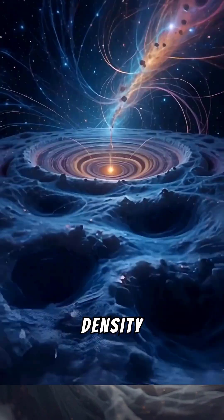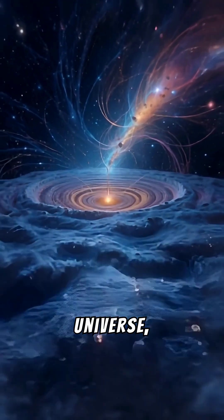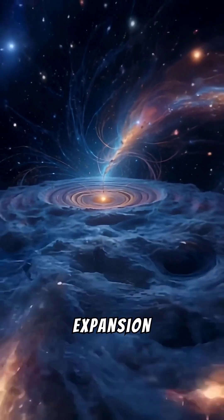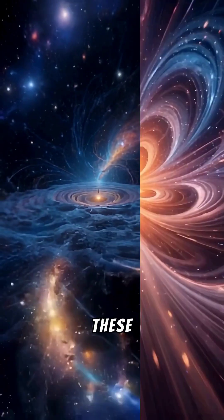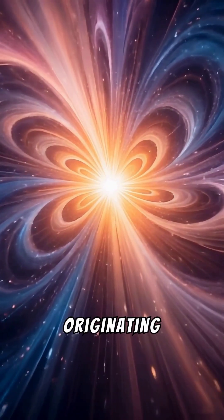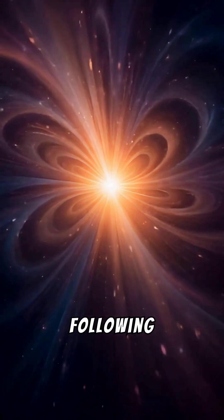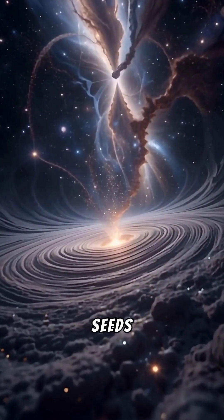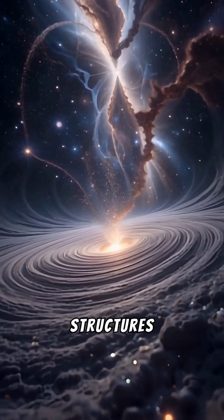Cosmic voids are thought to have formed from tiny density fluctuations in the early universe, amplified by cosmic expansion over billions of years. These fluctuations, originating in the inflationary period following the Big Bang, acted as seeds for the formation of the cosmic structures we see today.